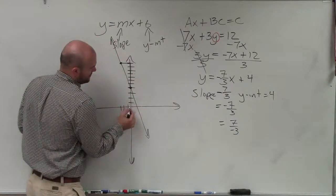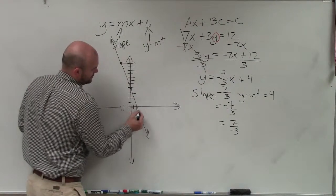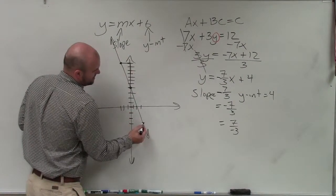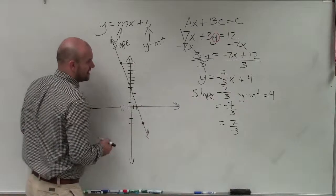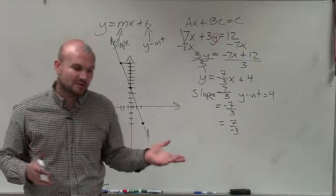Now also, I could do negative 7 over 3: 1, 2, 3, 4, 5, 6, 7, and then 1, 2, 3. And you could see that gives me another point that's on the line. But we only need to do this twice to be able to graph it.